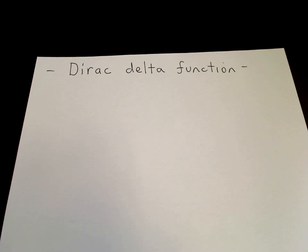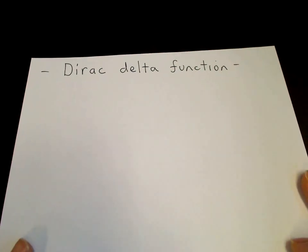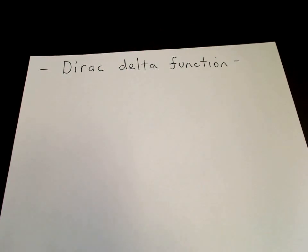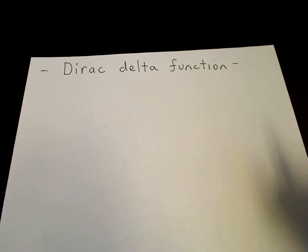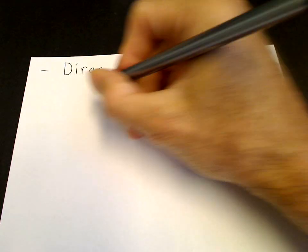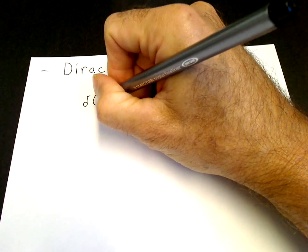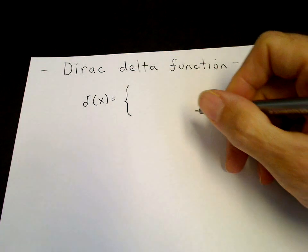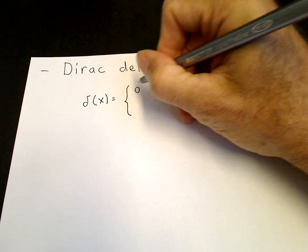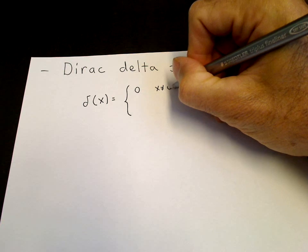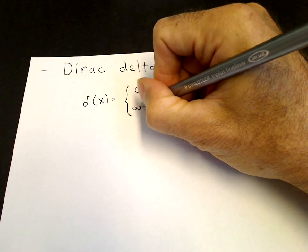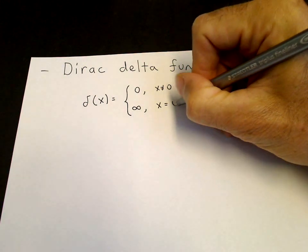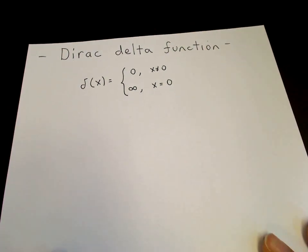The Dirac Delta function is a very useful tool in modeling, in physics, and in applied mathematics. Let me introduce the Dirac Delta function. We write it as delta of x. It's not actually a function. It's equal to 0 when x is not equal to 0, and it's infinite when x equals 0. It's a very unusual sort of function.